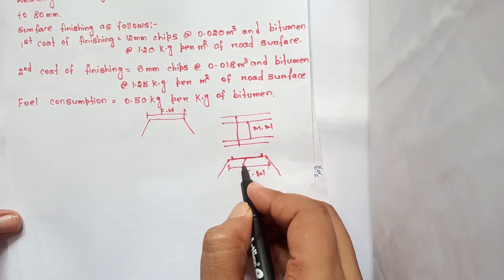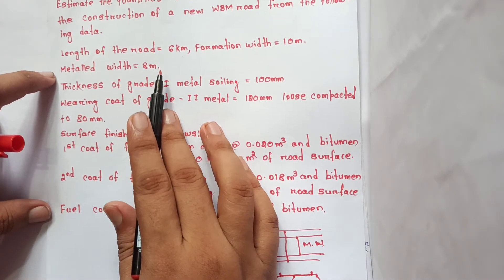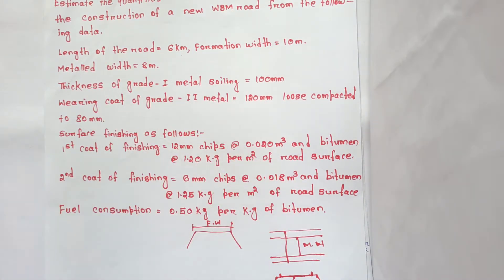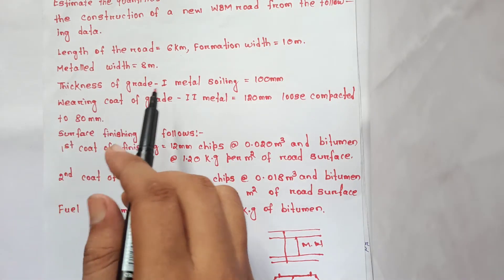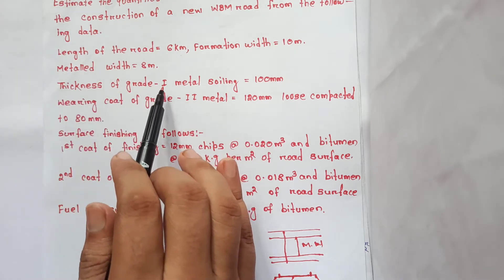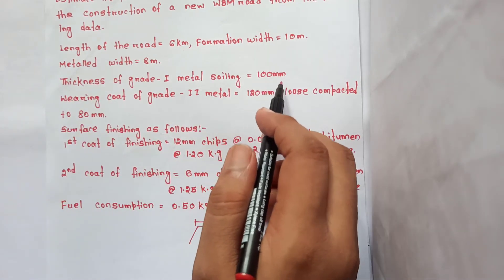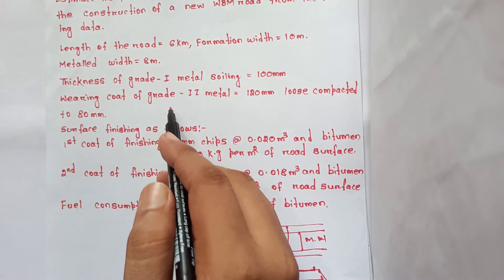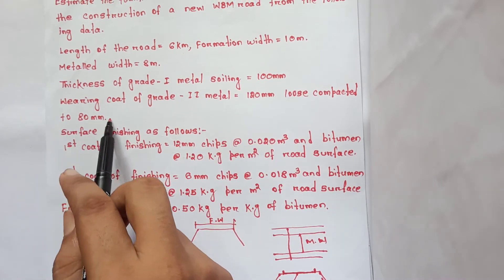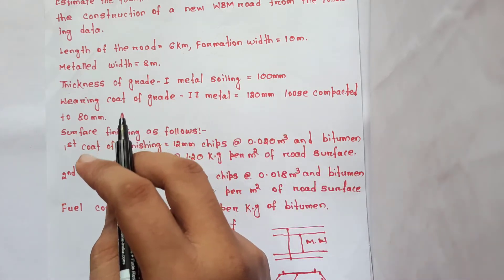The road is built as a metal road, made with metal width. The thickness of Grade 1 metal soiling is 100 mm.